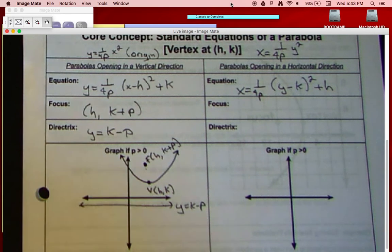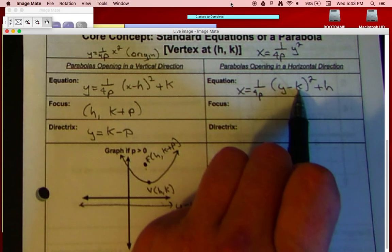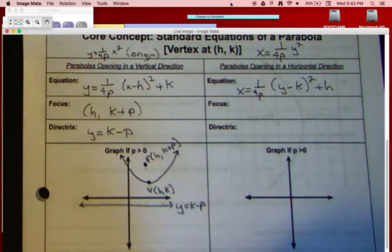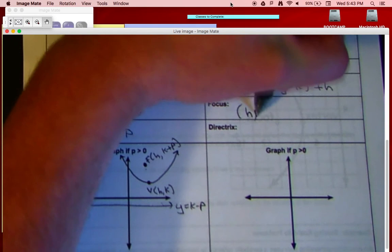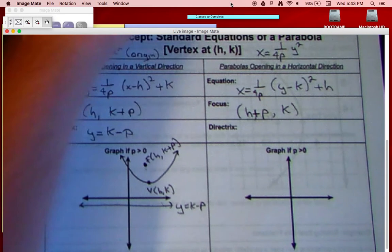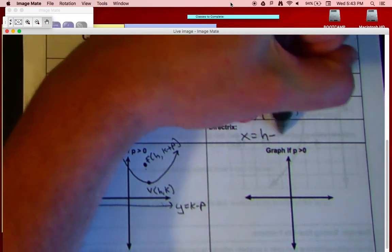And the key thing that you've got to remember is this number in here, it's attached to the y, is actually our k value, because remember k is up and down. Our focus is going to be whatever h is, plus p, and then our k value. Our directrix is going to be x equals h minus p.